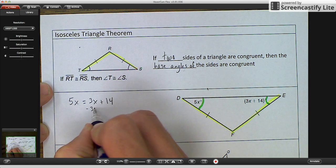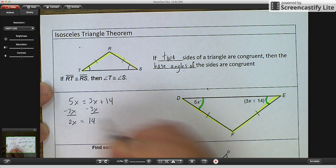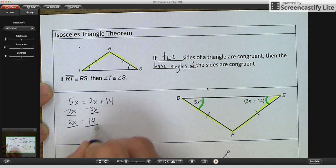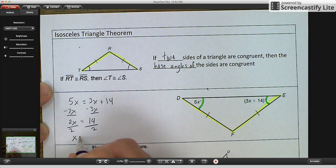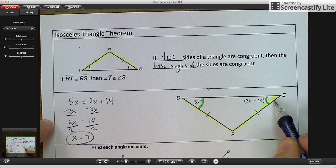So minus 3X from both sides. So you get 2X is equal to 14. Divide by 2. X equals 7. So we know that X equals 7. So we can go back and figure out the measurements of these angles.